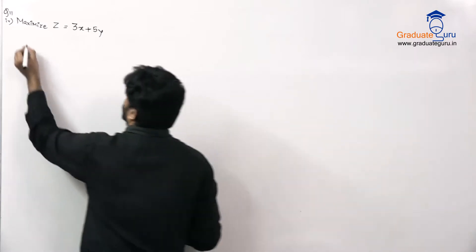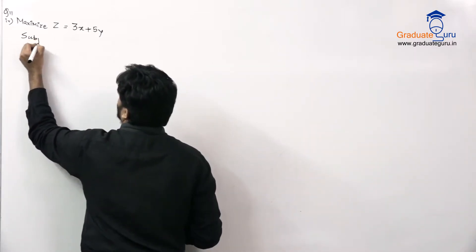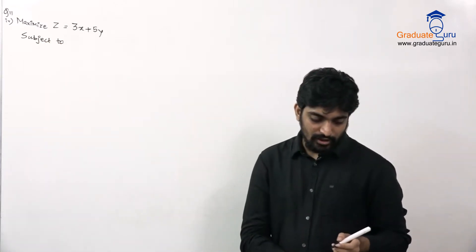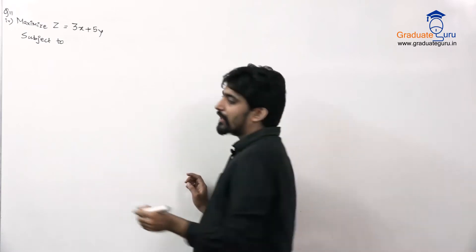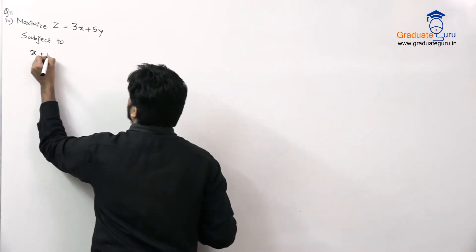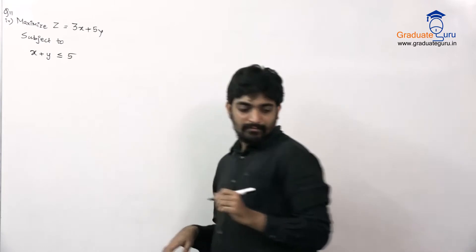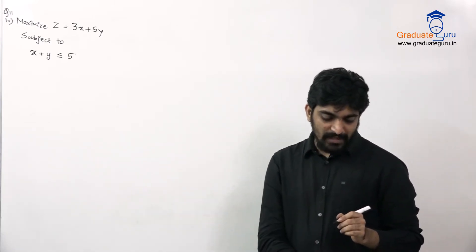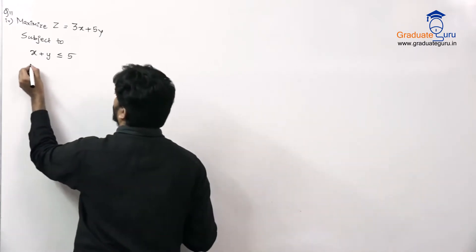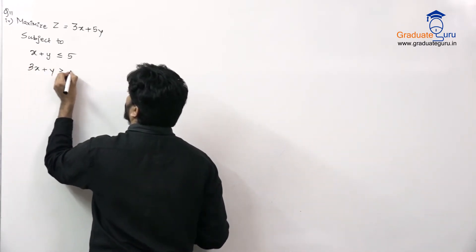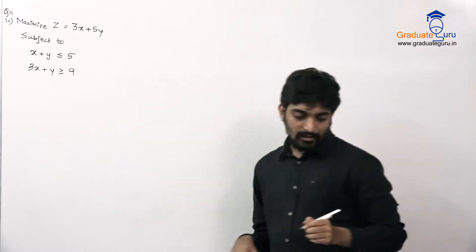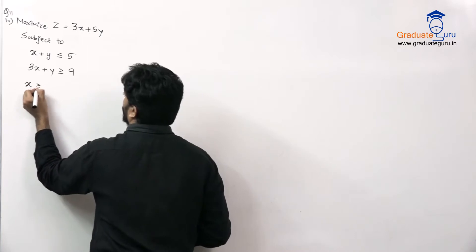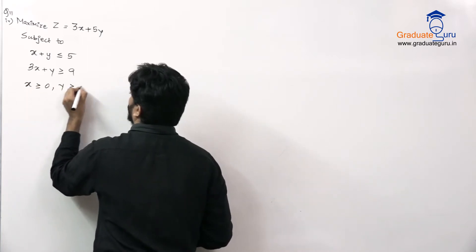Then we have subject to constraints. The first condition is x plus y is less than or equal to 5. Then we have 3x plus y is greater than or equal to 9. And then we have x greater than or equal to 0, y greater than or equal to 0.